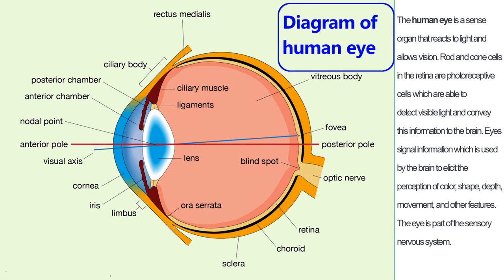The human eye is a sense organ that reacts to light and allows vision. Rod and cone cells in the retina are photoreceptive cells which are able to detect visible light and convey this information to the brain. Eyes signal information which is used by the brain to elicit the perception of color, shape, depth, movement, and other features. The eye is part of the sensory nervous system.